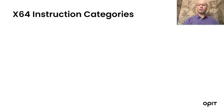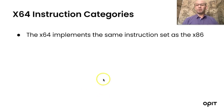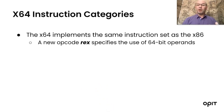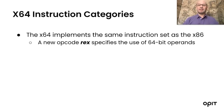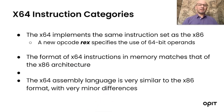Moving on to the x64 instruction categories: the x64 implements the same instruction set as the x86, with very few changes. One of them is the new opcode REX, which specifies the use of a 64-bit operand — the new layer on top of the previous x86 architecture. The format of x64 instructions in memory matches that of the x86, and the x64 assembly language is very similar to the x86 format with only minor differences.